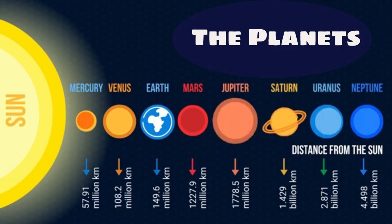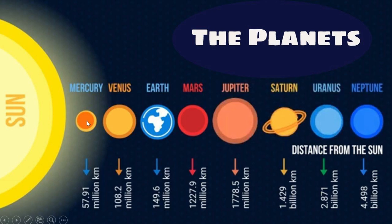Now let's look at the next slide. These are the planets according to their distance from the sun. Mercury is the nearest planet to the sun, with an estimated distance of 57.91 million kilometers. Then we have Venus, Earth, Mars, Jupiter, Saturn, Uranus, and Neptune. As we've just learned, the nearest planet is really hot, but the second planet, Venus, is even hotter. Can you tell me why? Yes — because of the thick atmosphere.